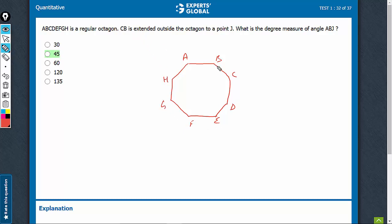and now they say the side CB is extended to a point J, okay. They're asking this angle ABJ.